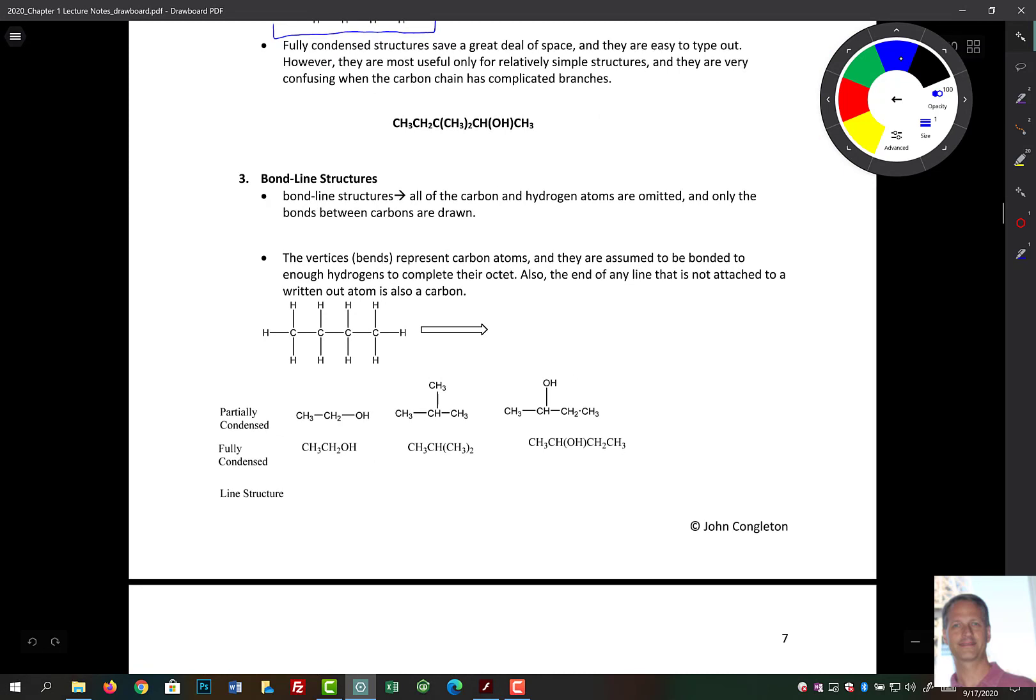So in our bond line structures, the atoms that are carbons and H's are generally going to be left out. So instead, what we do, we have to indicate their position, and we do that by changing the angle, by drawing bends. So bends represent the carbon atoms. They're assumed to be bonded to enough hydrogens to complete their octet, unless there's some type of a formal charge associated with it.